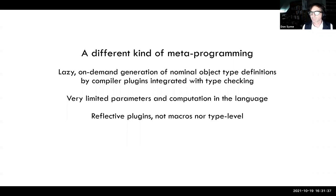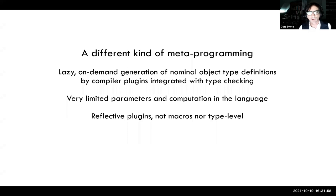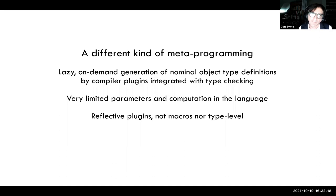It's a lot like a macro system, except implemented in libraries using reflective programming, with similarities to Scala macros. The end experience is you get a whole lot of types delivered that mediate your access to some kind of resource. It's a different kind of metaprogramming — lazy on-demand generation of nominal object type definitions by compiler plugins, activated during the type checking process. It's not very generic; there are very limited static parameters only. You can't compute with the parameters on the usage side, and they don't provide sophisticated type-level computation in the traditional sense. They're reflective plugins — not quite macros, nor constrained type-level programming in the type classes or constraints sense.